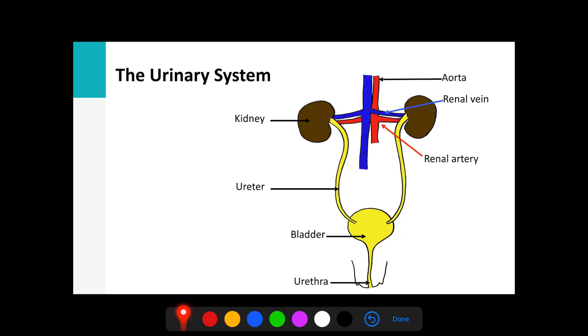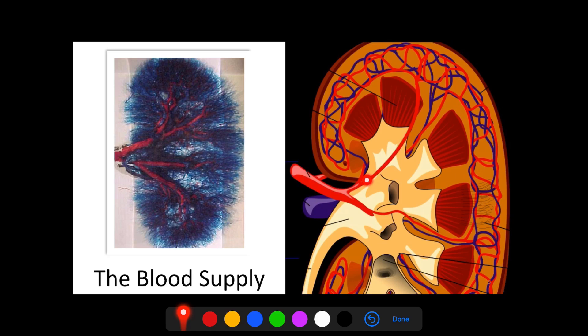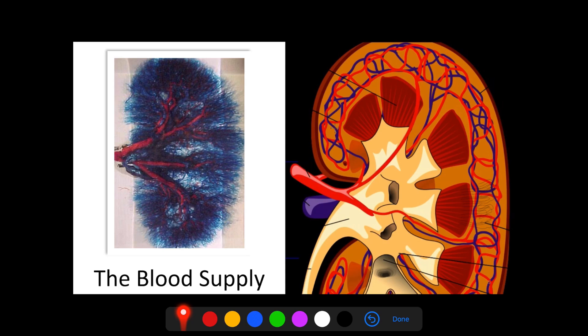Your kidneys weigh less than 1% of the total human body, but receive about 25% of cardiac output. The kidneys are full of blood vessels — arteries, arterioles, and capillaries. The kidneys hold approximately 25% of the entire blood supply at any time, about 1.1 liters per minute. For a normal person with about 5 liters of blood, within 5 minutes all the blood has already been filtered before returning to the bloodstream.